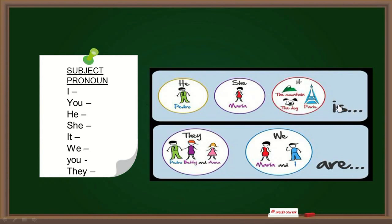En vez de she is, puedo decir María is. En vez de decir it is, puedo decir the mountain is, the dog is, Paris is. Lo mismo sucede con el plural. En vez de decir they are, podría decir Pedro, Betty and Anna are. En vez de decir we are, puede decir María and I are. María and I are friends.